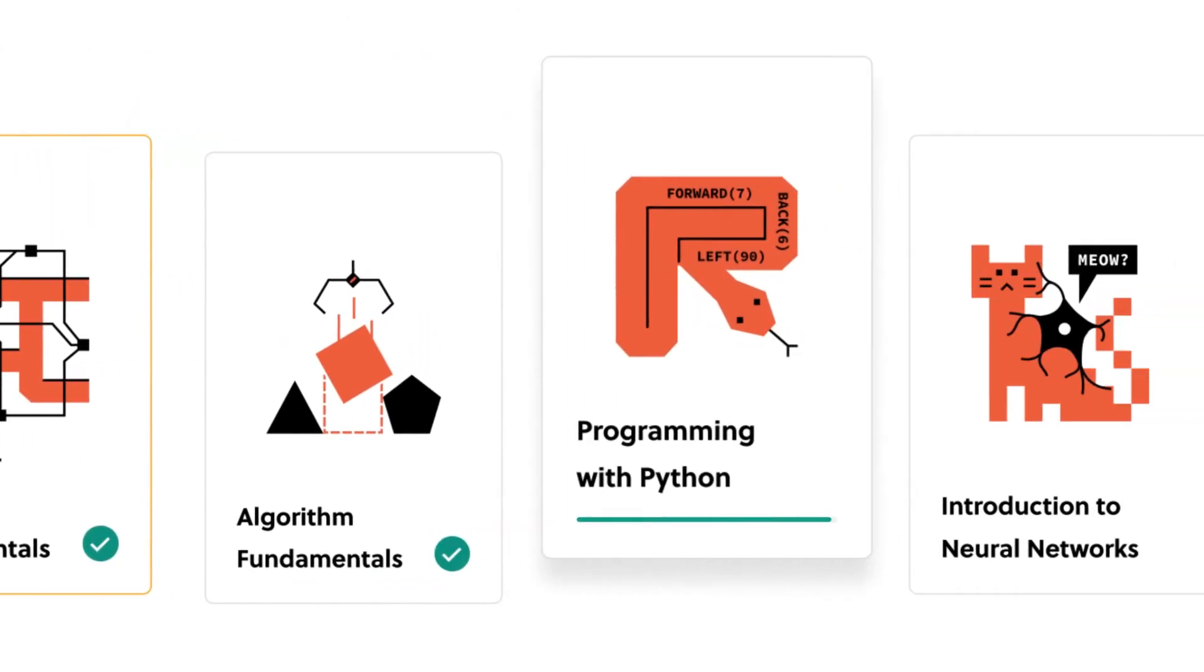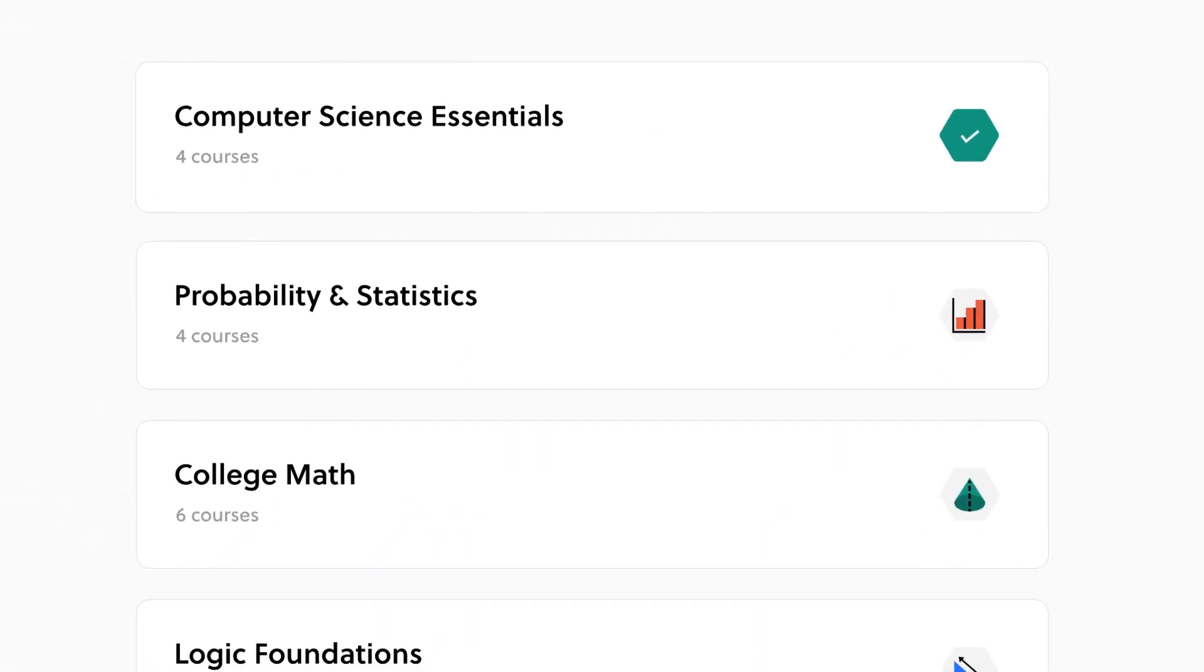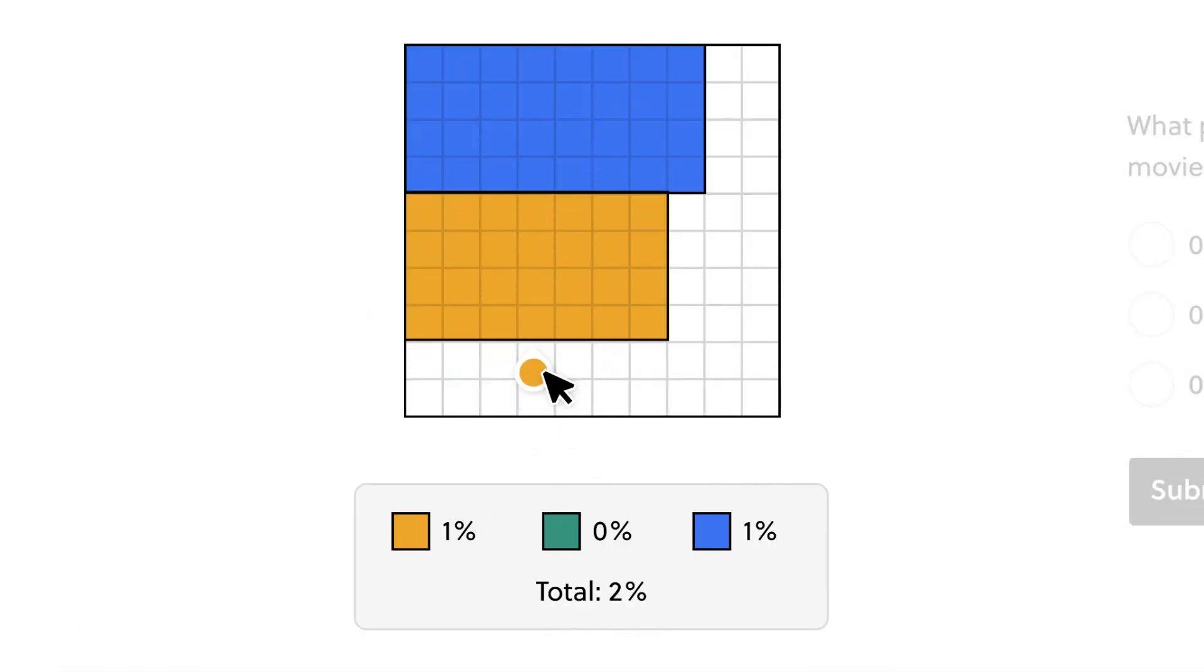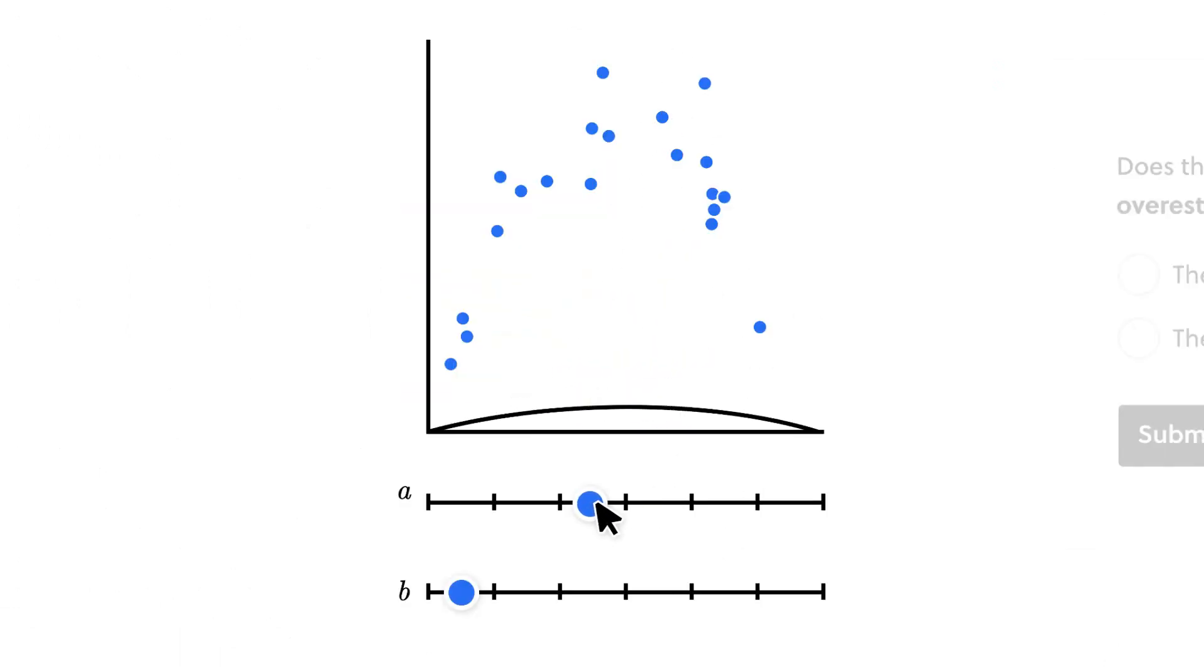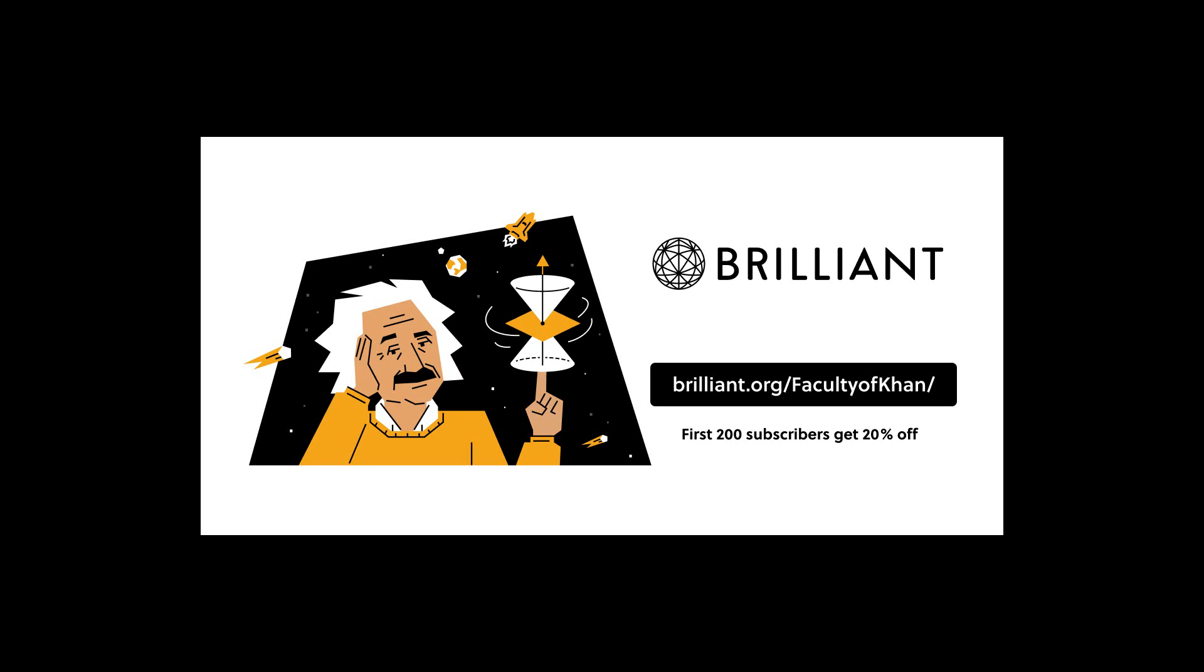To try everything Brilliant has to offer free for a full 30 days, visit brilliant.org/facultyofkhan or click on the link in the description below. The first 200 of you that sign up will get 20% off Brilliant's annual premium subscription.